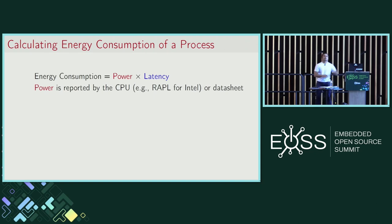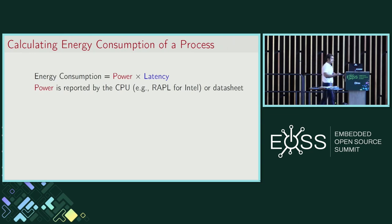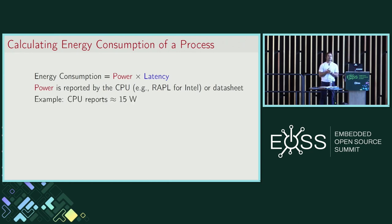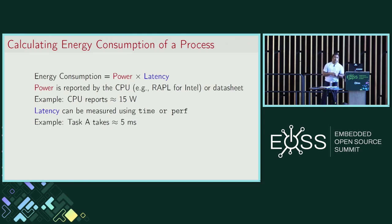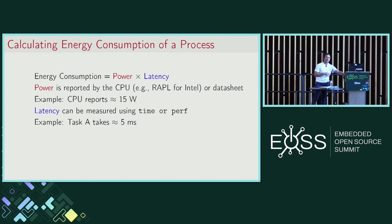The power can be obtained from the CPU. For example, the RAPL interface in Intel tells you how much power the CPU is using exactly at that point in time. You can also refer to the data sheet for specific systems. Let's assume that the CPU reports you're using 15 watts of power. The latency can be measured using a tool such as time or perf. Let's say that your task takes five milliseconds of latency. Energy is equal to 75 millijoules.